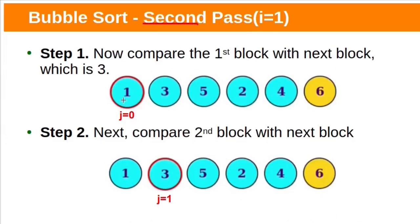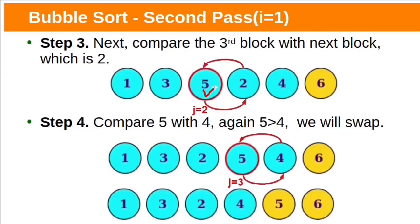In the second pass, start from the first block and compare it with the second block. Here 1 is not greater than 3, so no swap. Compare the second block with the third: 3 is not greater than 5, do not swap. Compare the third block with the fourth: 5 is greater than 2, so swap. Finally compare the fourth block with the fifth: 5 is greater than 4, so swap. We need not compare the fifth block with the sixth since the last two blocks are already sorted.